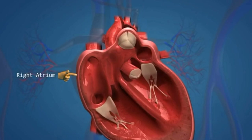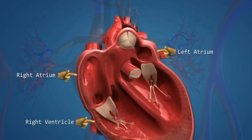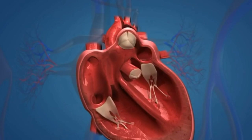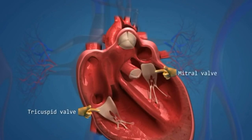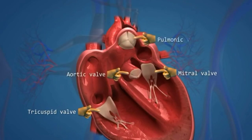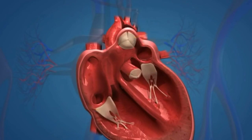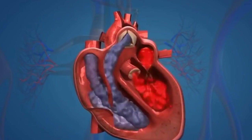To review the chamber names: the right atrium and left atrium, also known as the right auricle and left auricle; the right ventricle and left ventricle. The tricuspid valve separates the right auricle from the right ventricle; the mitral or bicuspid valve separates the left auricle from the left ventricle. The aorta contains the aortic valve and the pulmonary artery contains the pulmonic valve — both are also known as semilunar valves.